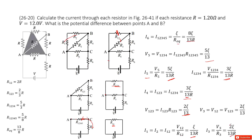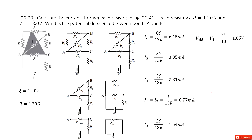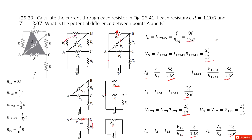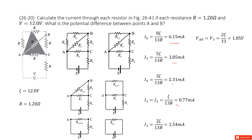It looks complex, but after simplifying and inputting all the given quantities, we get the current for each resistor. The problem also asks for the potential difference between point A and point B, which is voltage V3. We found that earlier: V3 equals 2 epsilon over 13, which equals 1.85 volts.